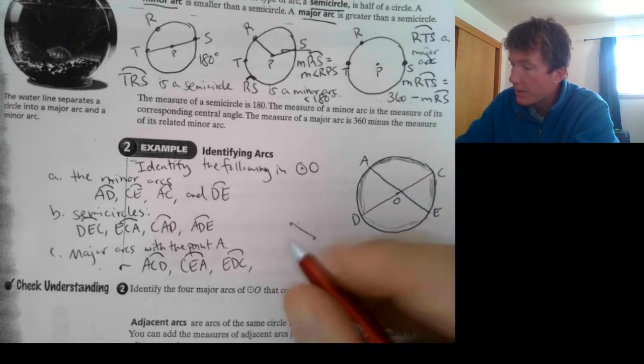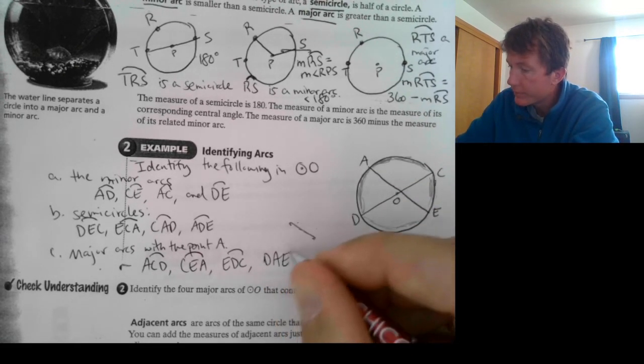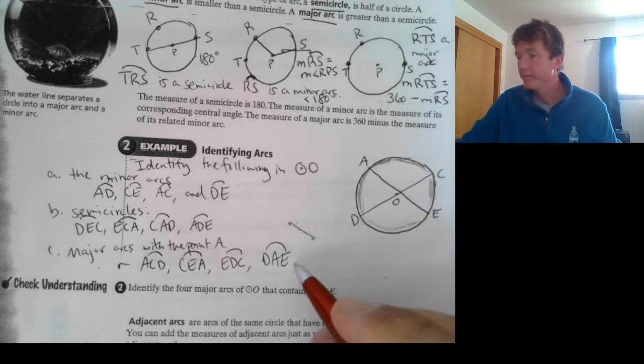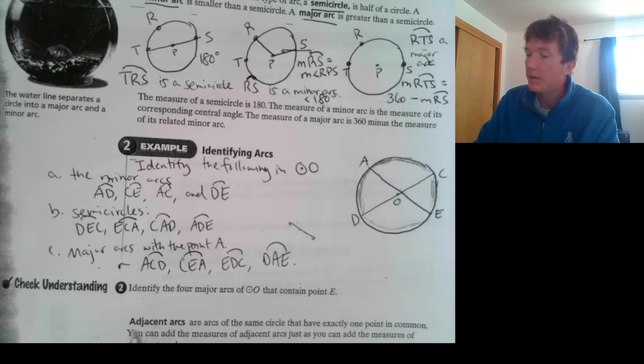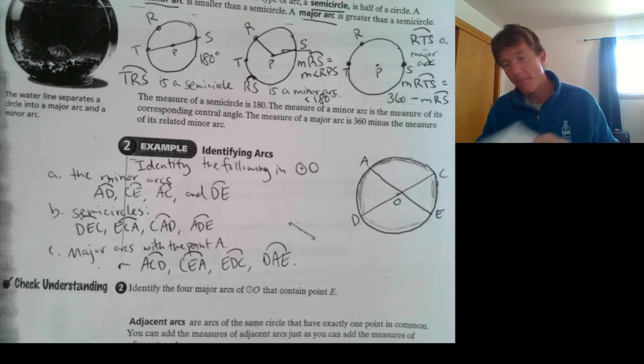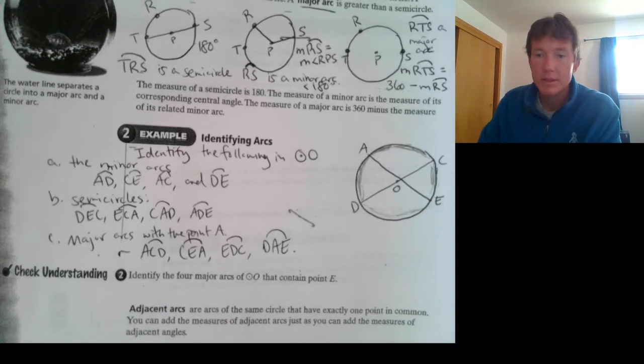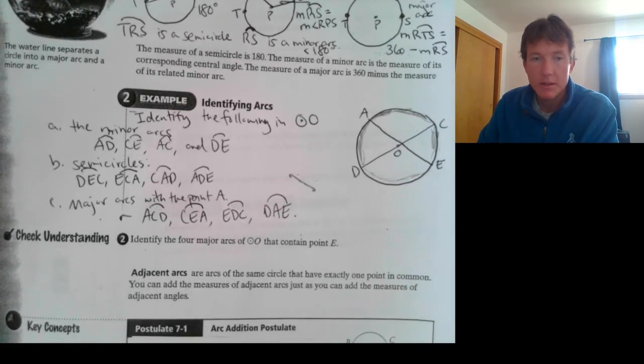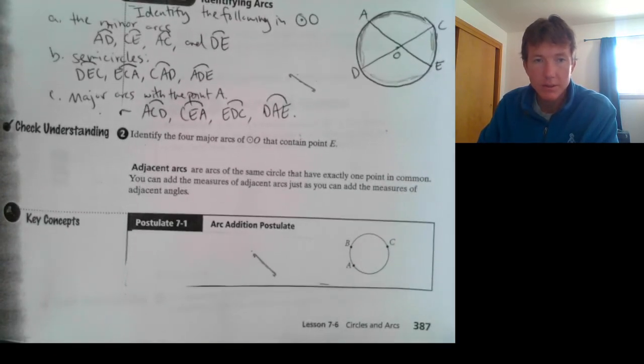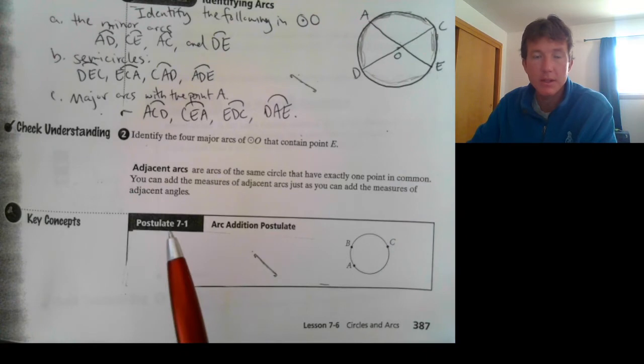And then lastly, DAE. And then you can do the other one if you'd like. Identify the four major arcs that contain the point E. So, let's go over one more thing in this video, the arc addition postulate. But before we do that, we have to name adjacent arcs. Adjacent arcs are arcs of the same circle that have exactly one point in common.